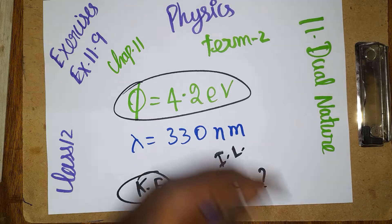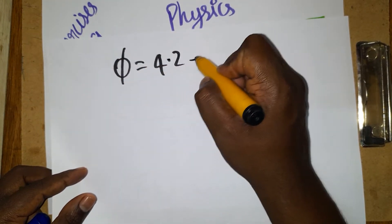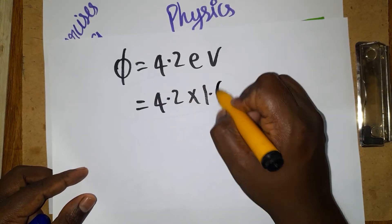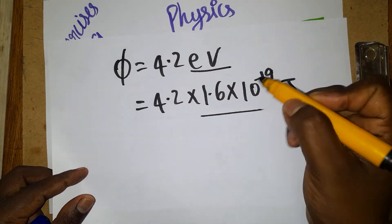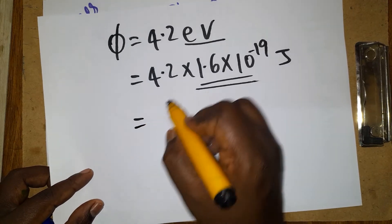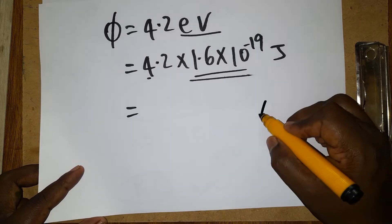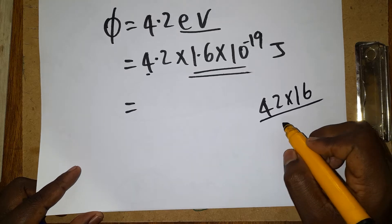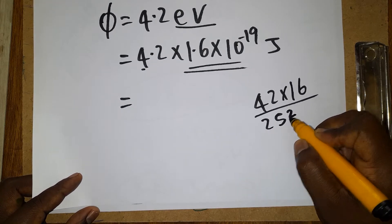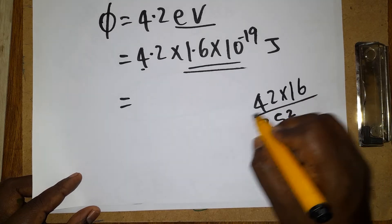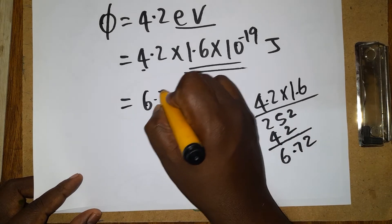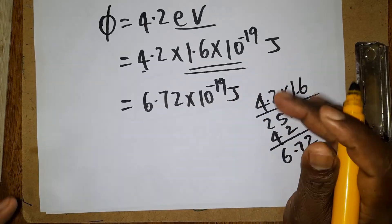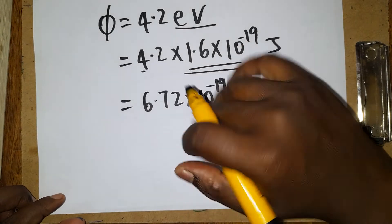For the electron to be emitted, the incident light energy must be more than the work function. The work function is 4.2 eV. Converting to joules: 4.2 × 1.6 × 10⁻¹⁹ joules. To convert electron volts to joules, we multiply by 1.6 × 10⁻¹⁹. So 4.2 × 1.6 = 6.72, giving us 6.72 × 10⁻¹⁹ joules as the work function.